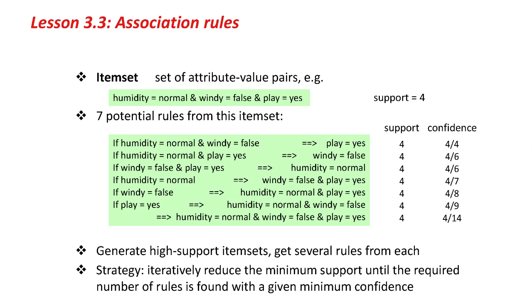I want to introduce you to the idea of an item set. An item set is a set of attribute-value pairs — like humidity is normal, and windy is false, and play is yes. An item set has a certain support given a dataset. Here there are four instances in the dataset that are in that item set. We can take that item set and permute it in different ways to produce rules, all of which have a support of 4.